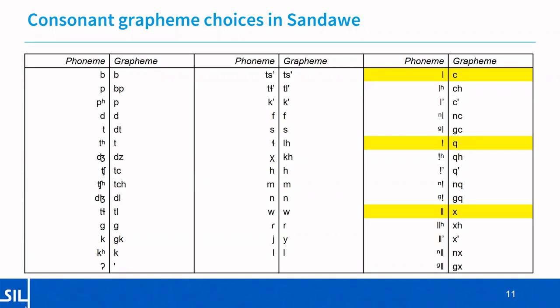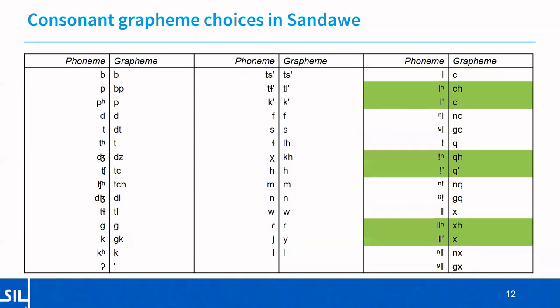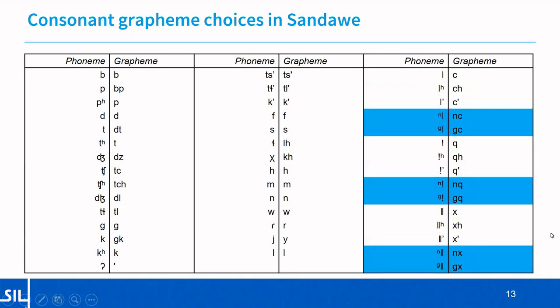One area where SIL advised the community to follow the orthography decisions of languages in Southern Africa was the click inventory in general, and the community agreed. As well as using C for dental clicks, we have Q for post-alveolar clicks and X for lateral clicks, as in Zulu and Xhosa. The representation of click accompaniments also largely follows those languages, with aspiration represented by H and ejective release by an apostrophe. These symbols follow the click symbols, fitting intuitively with pronunciation. In contrast, N for nasalization and G for voicing precede the click symbol, fitting with people's intuitions about how these sounds are pronounced and should be written.